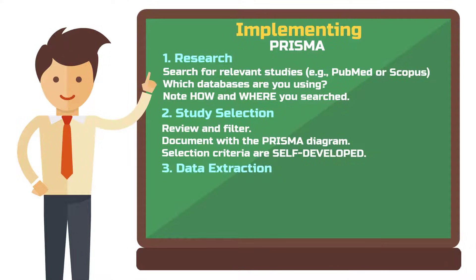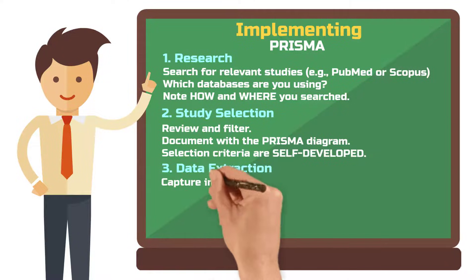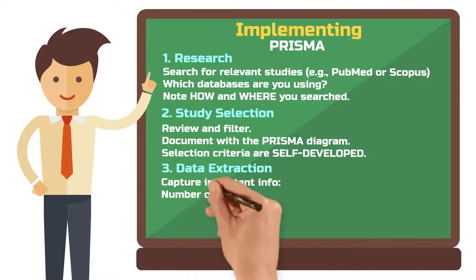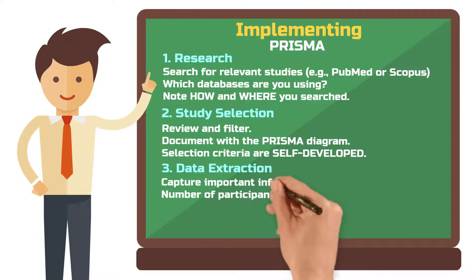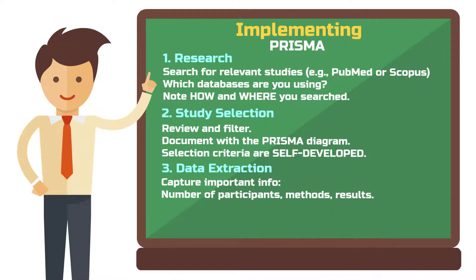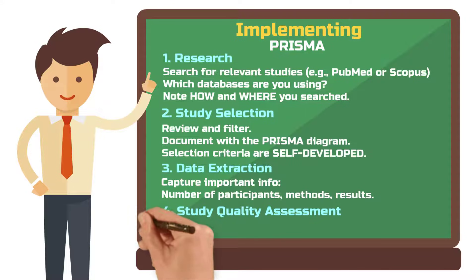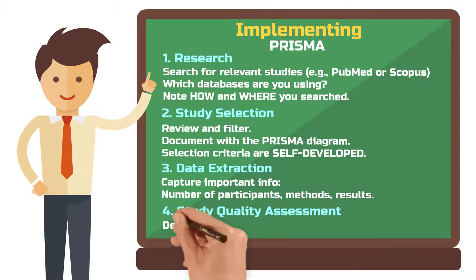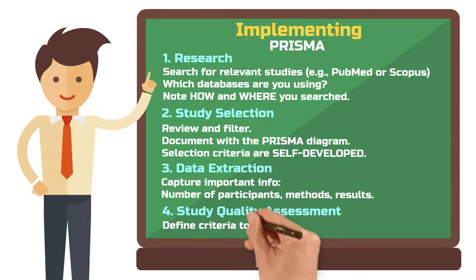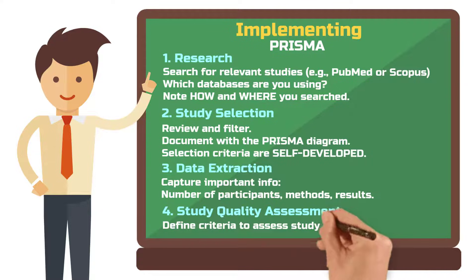Data extraction: gather key information from the selected studies such as sample size, methods, and results. What exactly you extract depends on what you're investigating — the research question of your review. Then, study quality assessment: assess the quality of the studies to ensure they are reliable and make a decision if they should still be included.